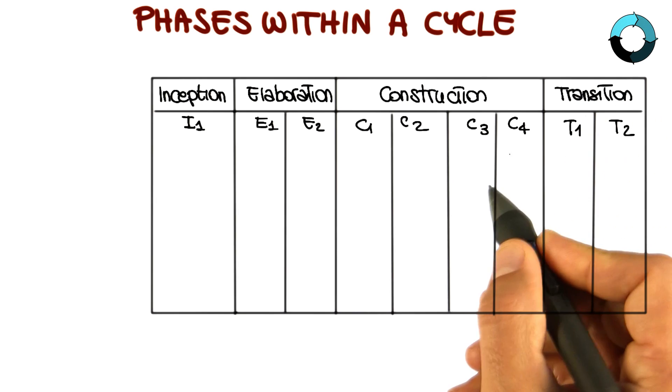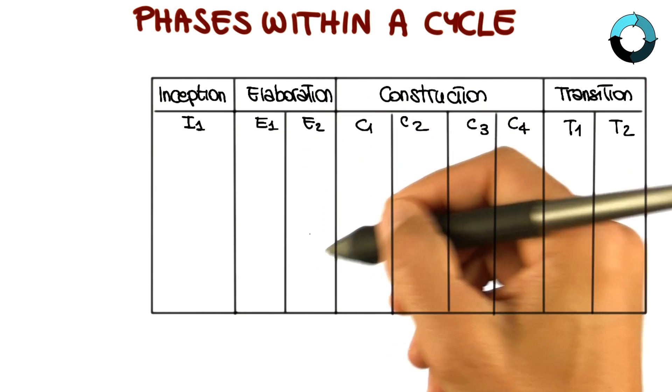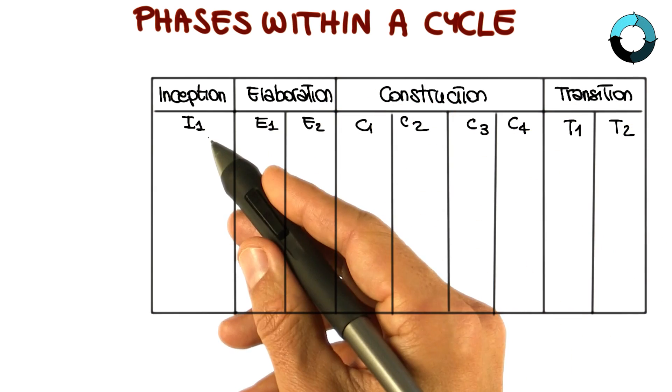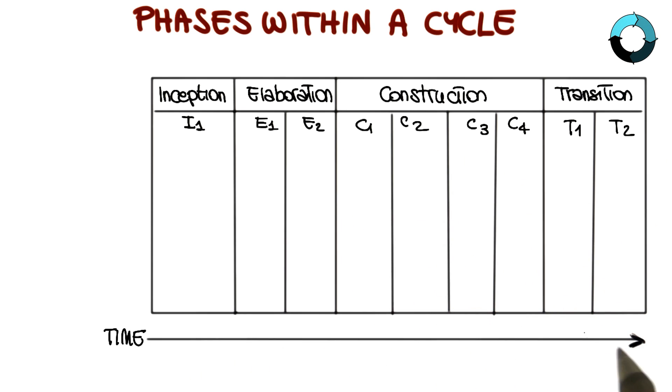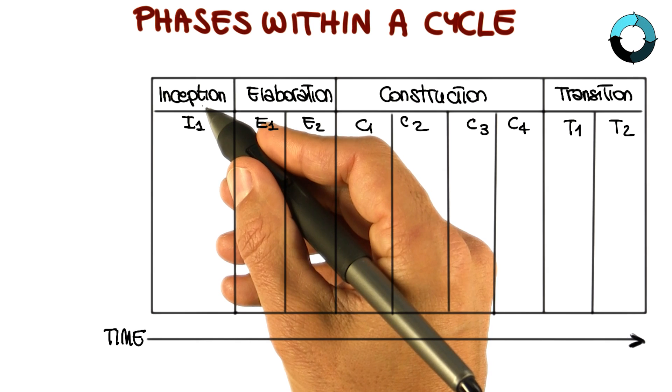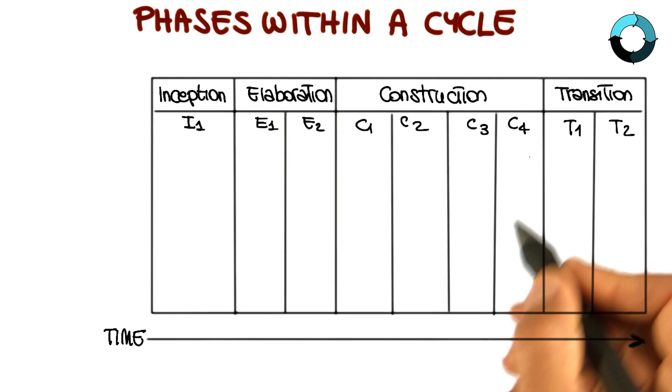So I'm going to start by representing the four RUP phases here with possible internal iterations: I1, E1 and E2, C1, C2, and so on. And just as a reference, this is the way in which time will progress. So we will start with inception and finish with transition.